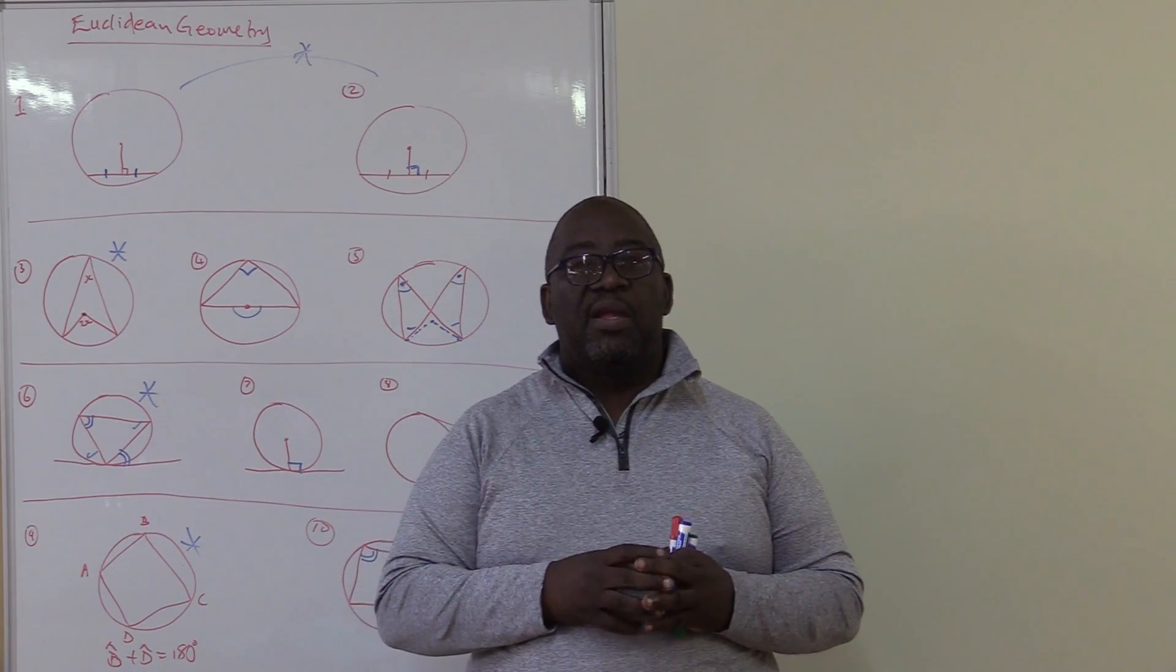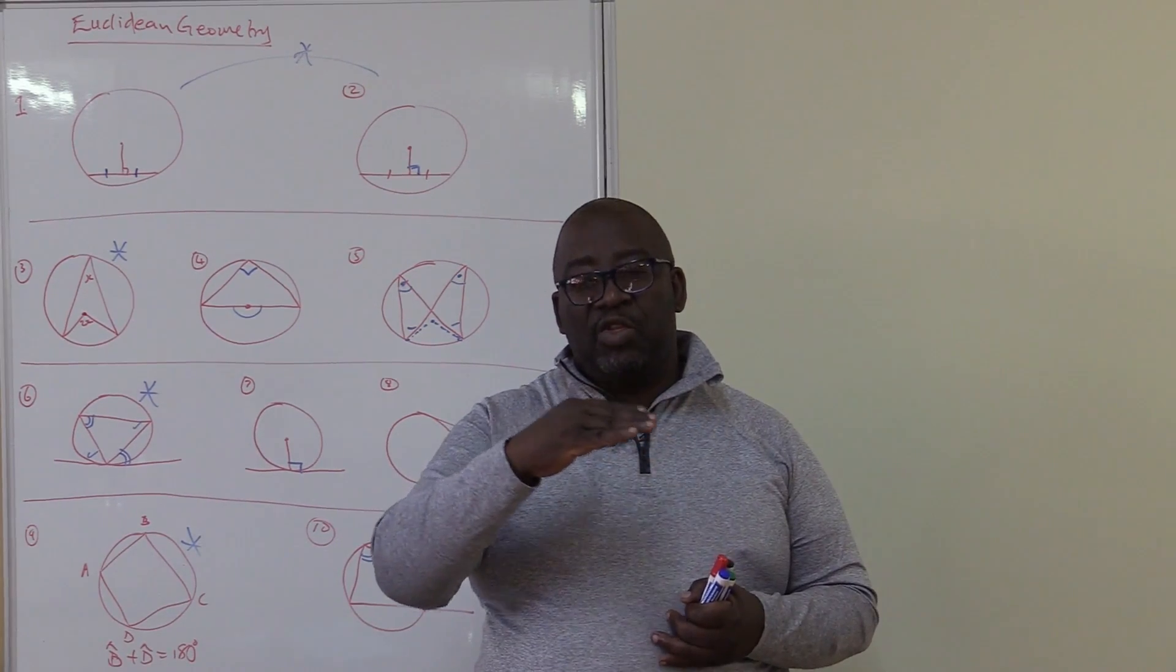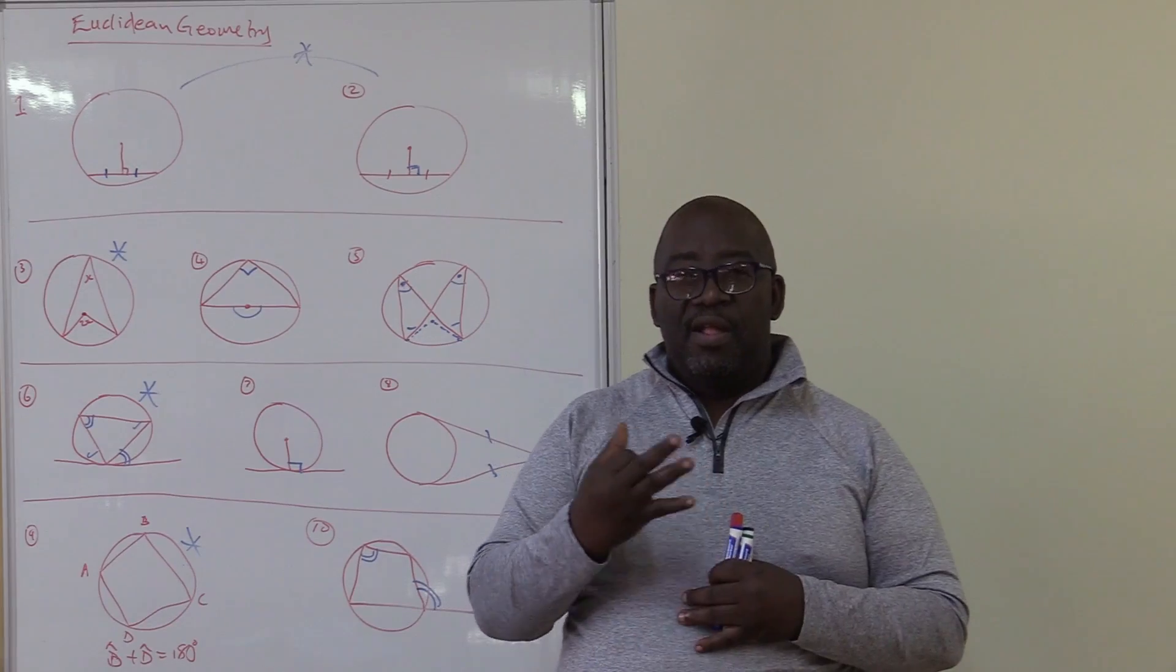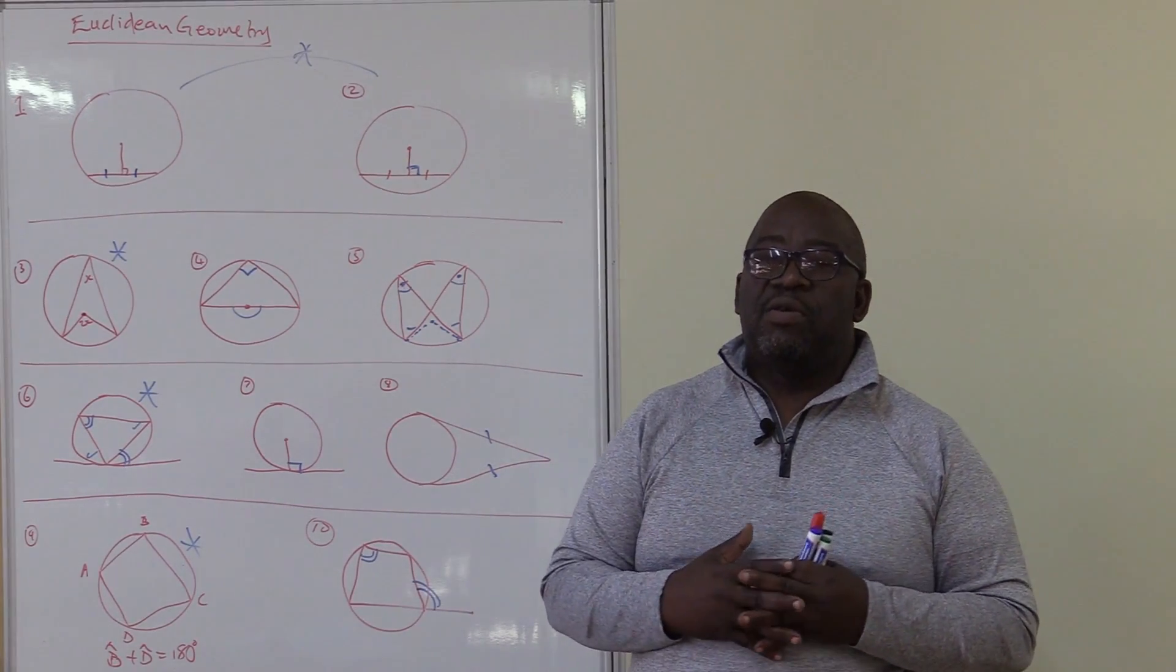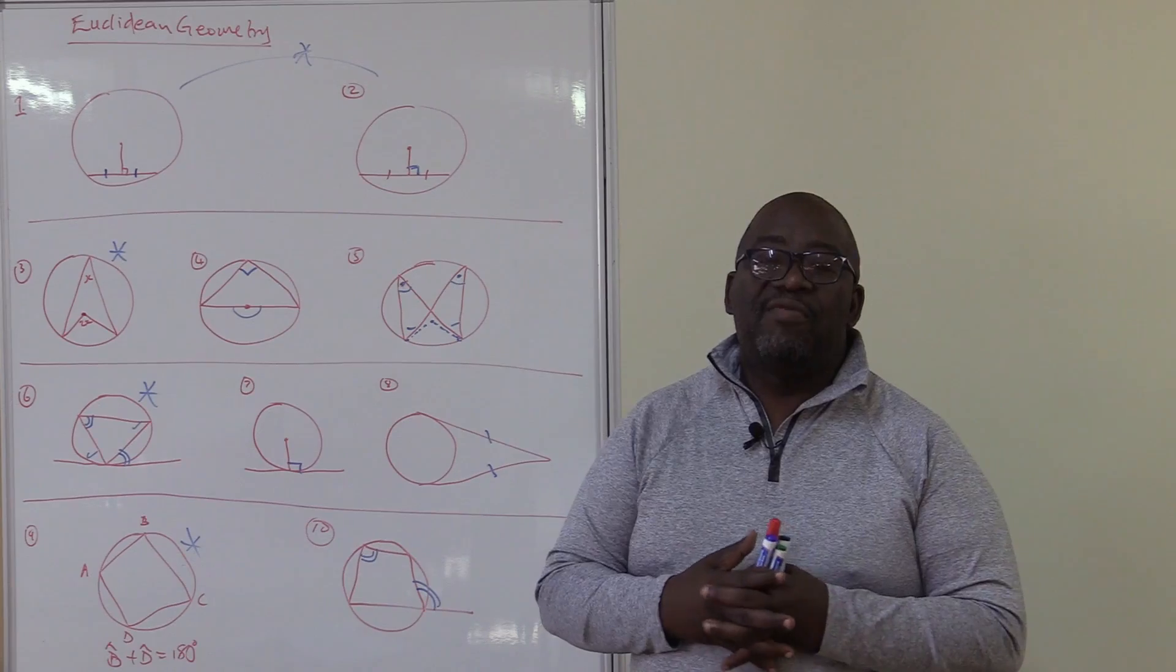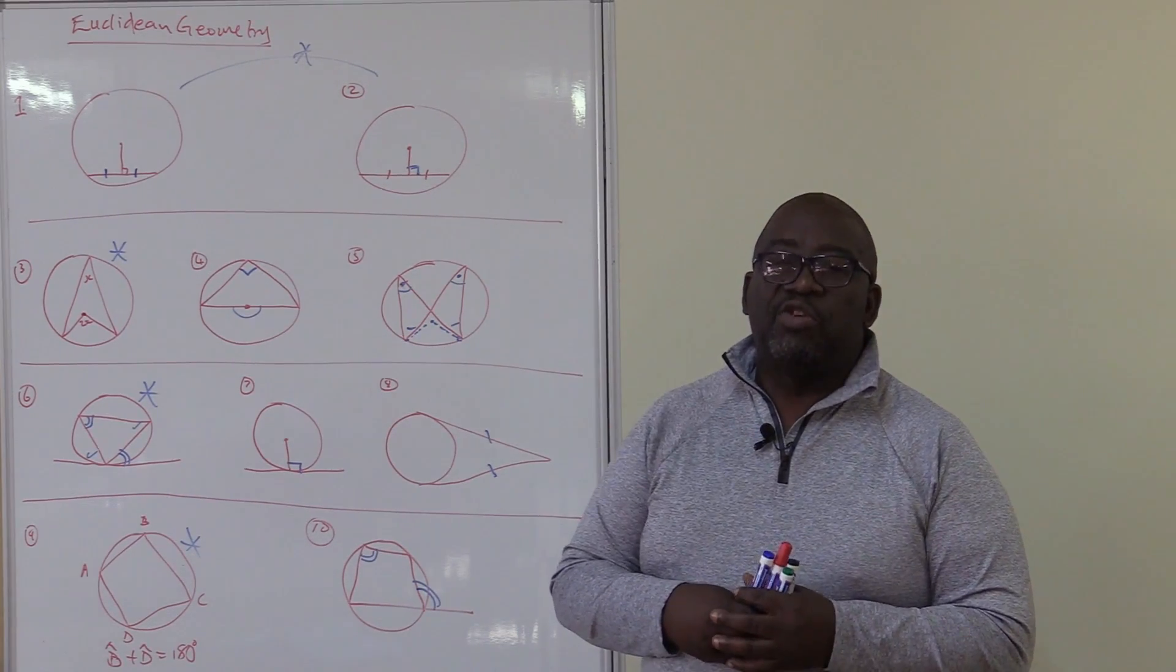The second one being proportional theorem. A line drawn parallel to one side of a triangle diverts these other two sides in the same proportion. The third one being the similarity theorem. With those 3 plus this 10 you are armed with every solution for your Euclidean geometry.